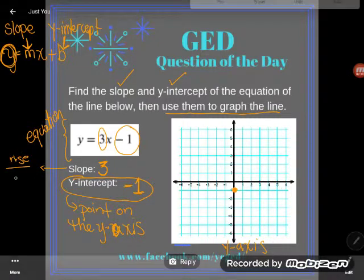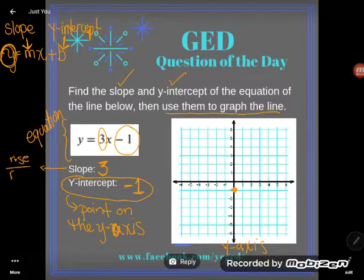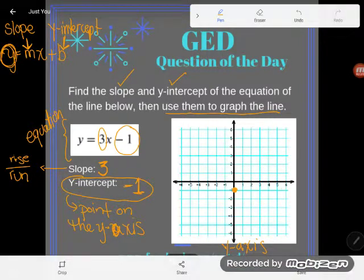The numerator of the fraction tells you how much to go up or down. And the denominator tells you how much to go left or right. How much to run. And so this particular number, we have 3 as a whole number. It doesn't look like a fraction.